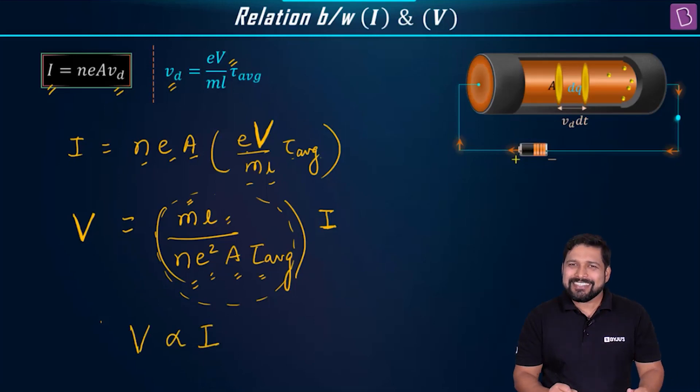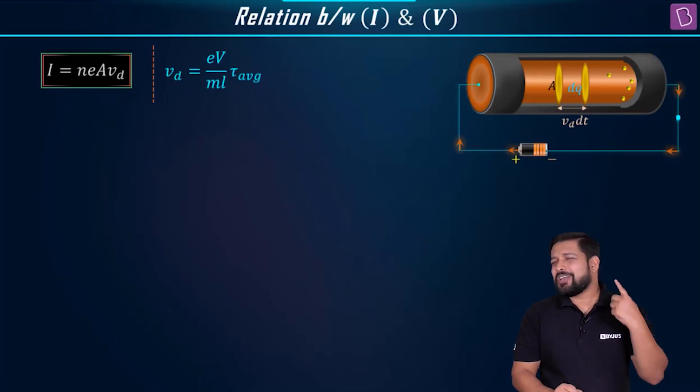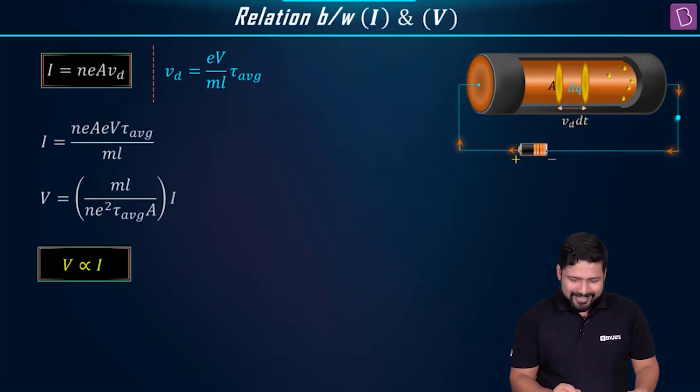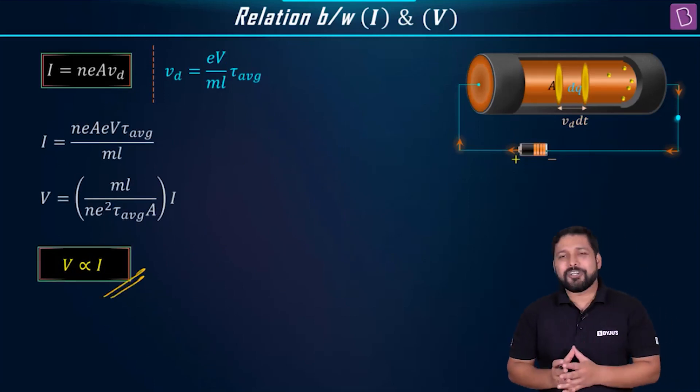Then can I write V is directly proportional to I. This is the relation that you have seen. You must have already seen this. We have seen this. Try to recall that law that you have read. So, this relation that is V is directly proportional to I.